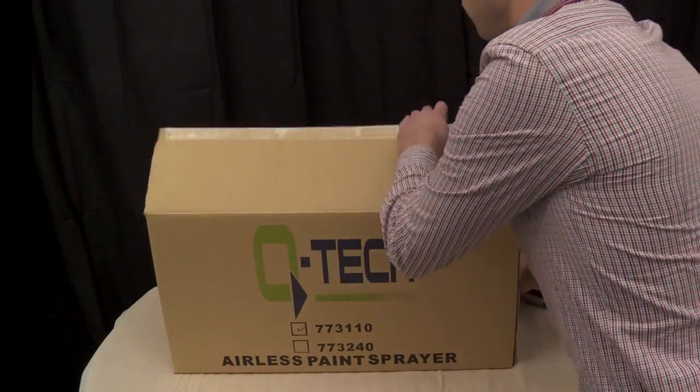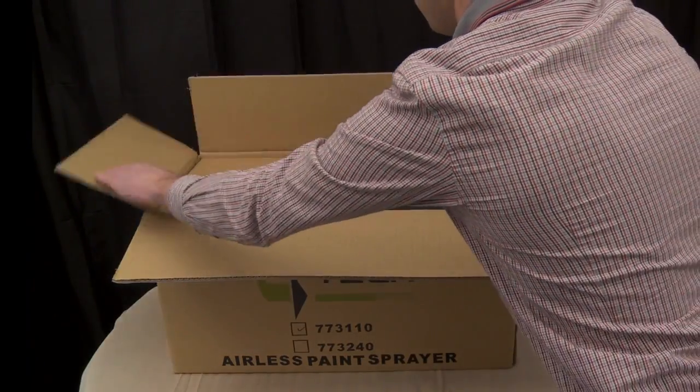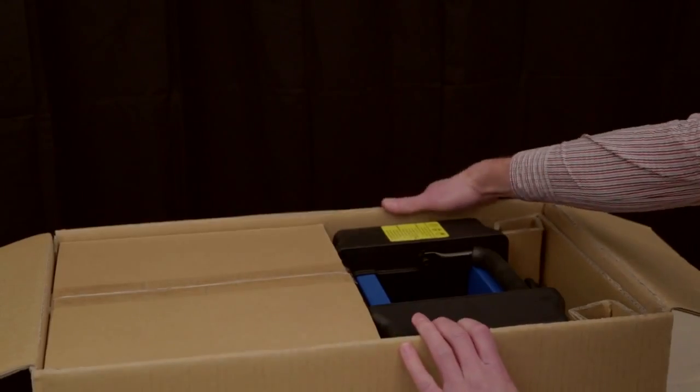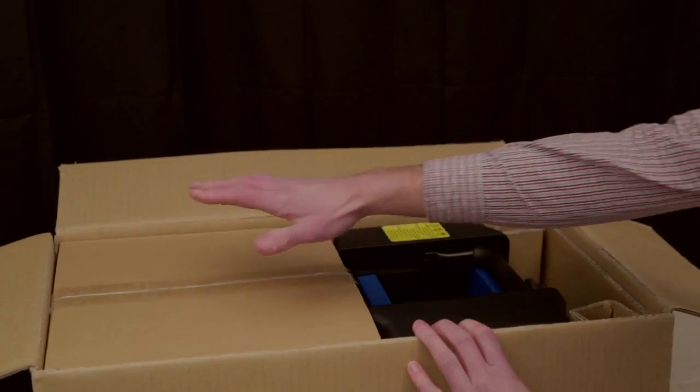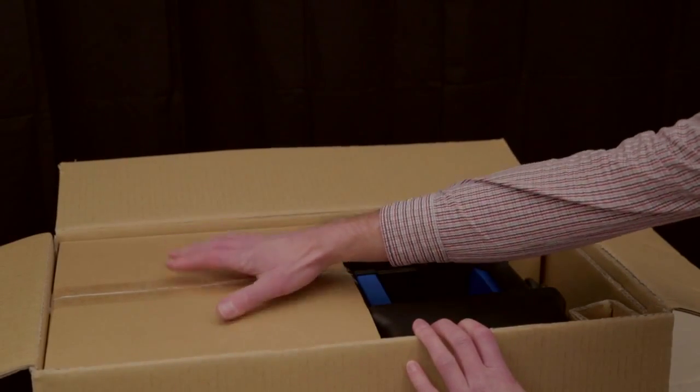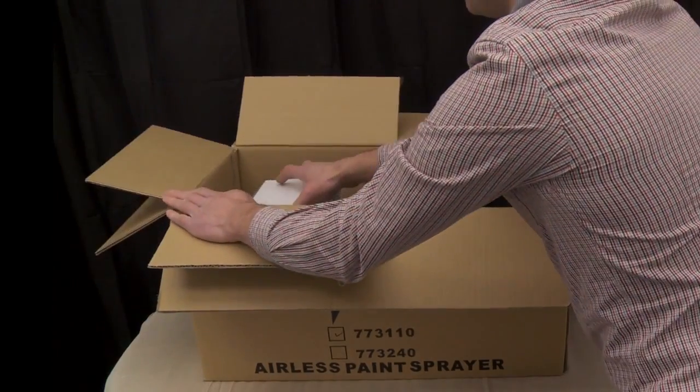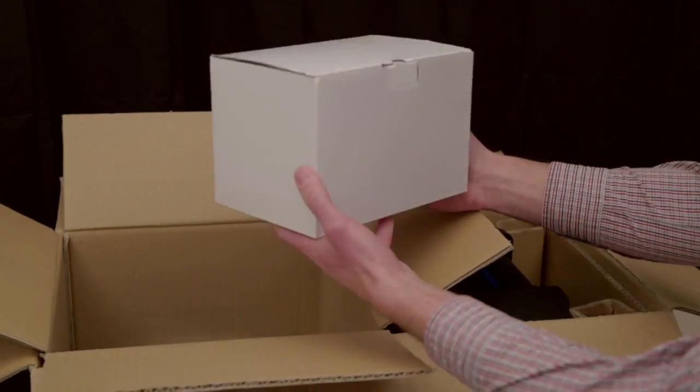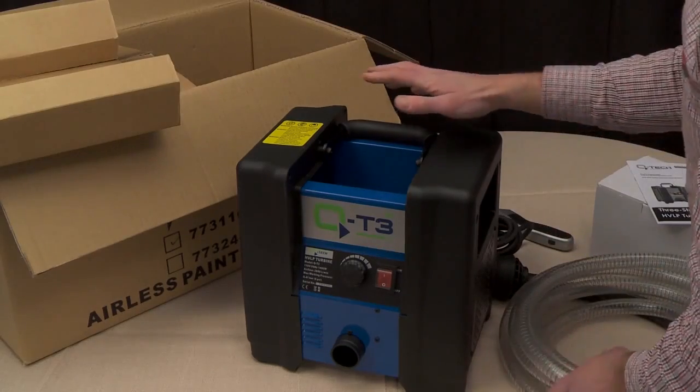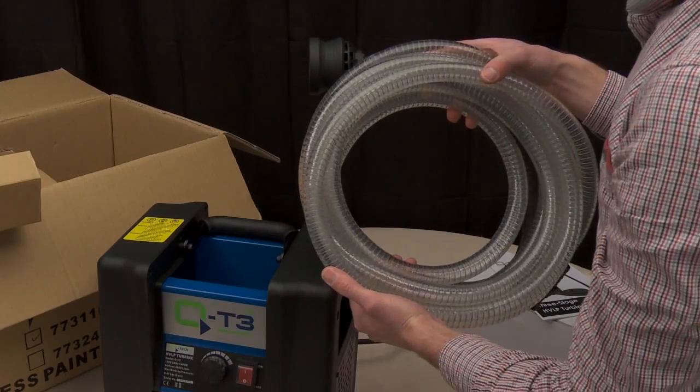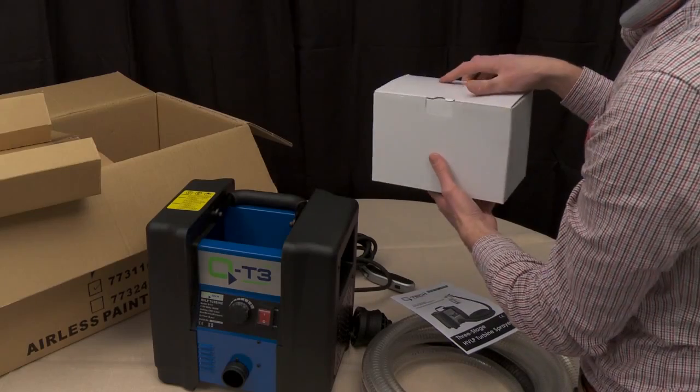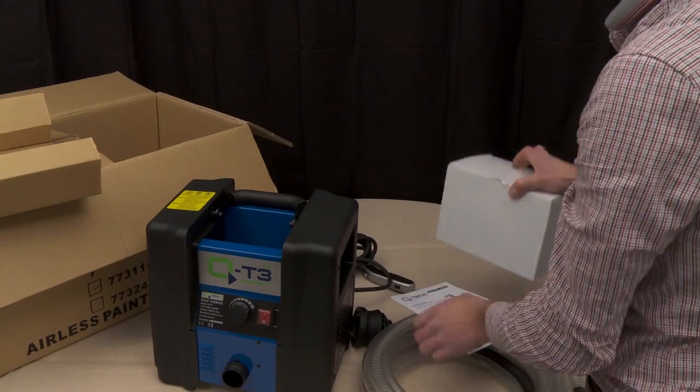When you take delivery of your QT3 turbine sprayer, it will come in one outer box. Inside the box, you will find a separate box and the QT3 turbine unit. After unpacking the outer box, you'll find the following components: the QT3 turbine unit, the hose assembly, the spray gun box, and the instruction manual.